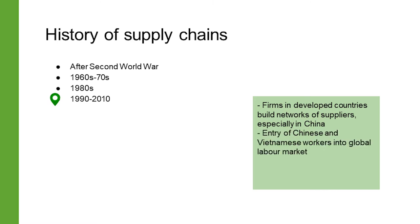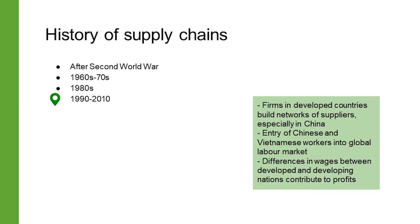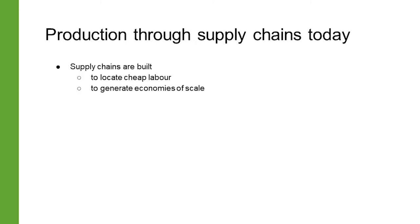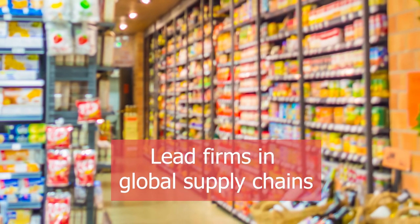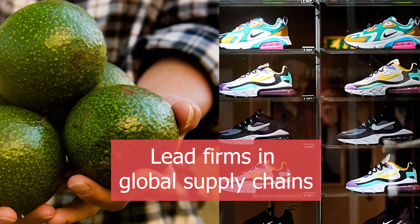The entry of China and Vietnam into the global economy provided a large increase in available labor, but without democratic representation. Profits could be attributed to wage differences between developed and developing nations. Multinational corporations that built these supply chains in search of cheap labor are today the most powerful actors in global supply chains. Known as lead firms, they are often buyers such as retail chains, and producers of branded products such as clothing, footwear and food.